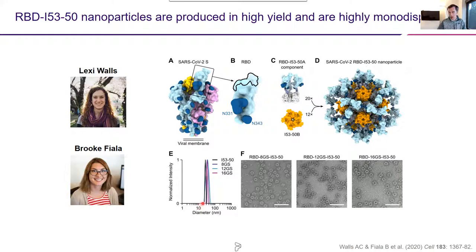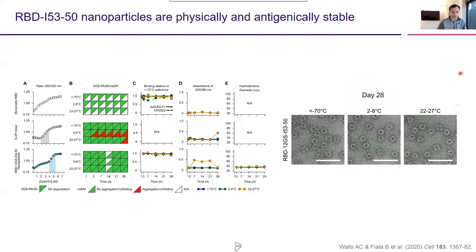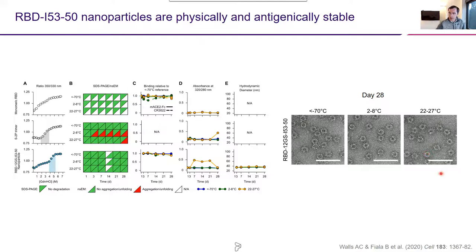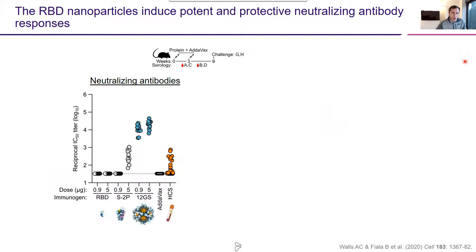These particles are very monodisperse — light scattering data shows sharp peaks at the expected hydrodynamic diameter, and electron micrographs show very monodisperse particles. The proteins express very well and are physically and antigenically quite stable. Comparing monomeric RBD to S2P trimer and the nanoparticle immunogen with a 12-residue linker, using a standardized quality control suite, we showed that over 28 days at room temperature we saw no degradation of any physical or antigenic properties relative to particles stored at minus 80. Electron micrographs of particles stored at room temperature for a month are indistinguishable from controls.